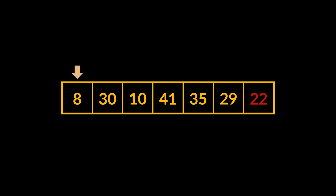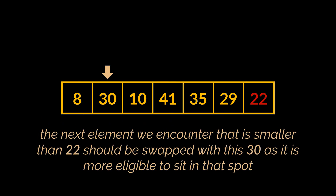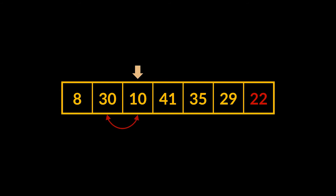Let's start with the first element — it is smaller than 22, so we leave it right where it is, as it is already on the left side of the array. However, the second element is a 30, so the next element we encounter that is smaller than 22 should be swapped with this 30, as it is more eligible to sit in that spot. The next element is a 10, and as we said, it should be swapped with the 30 — a 10 should be more to the left than a 30, since one is bigger than 22 and the other is smaller.